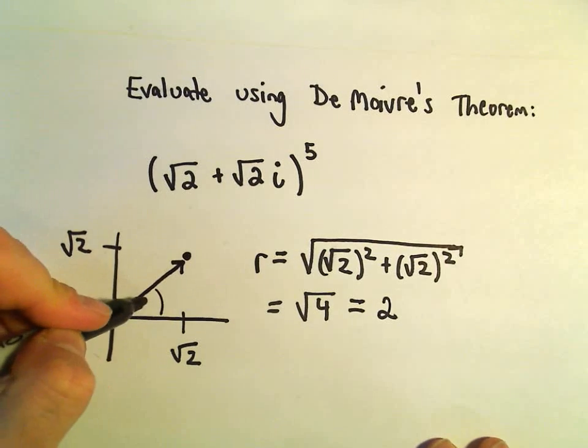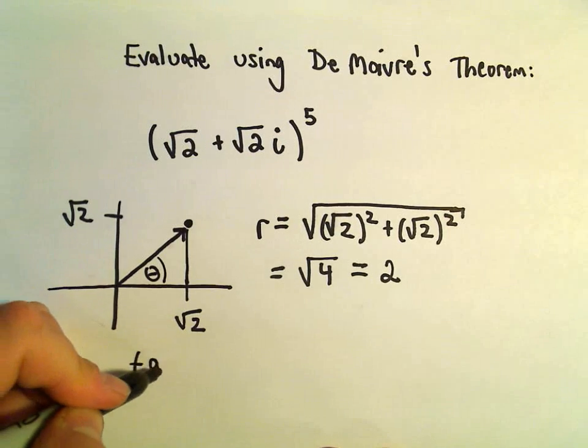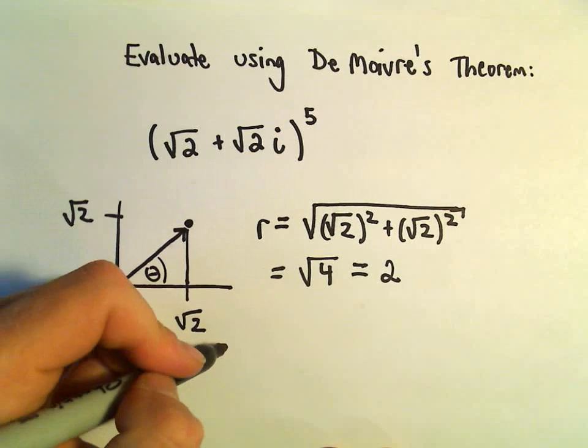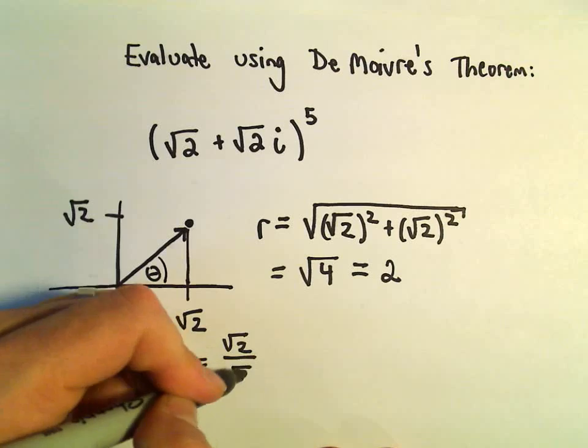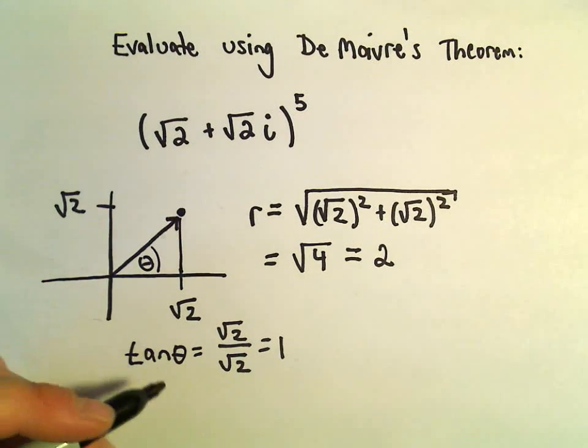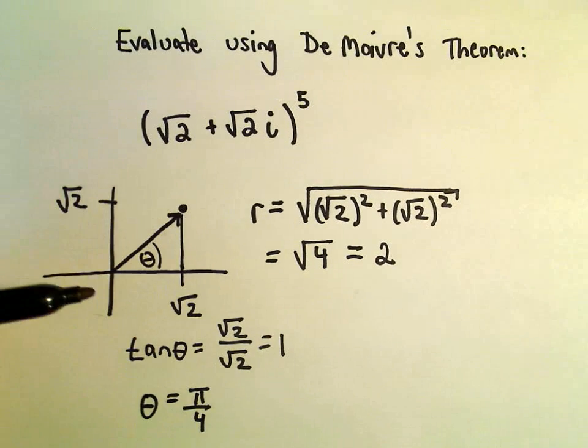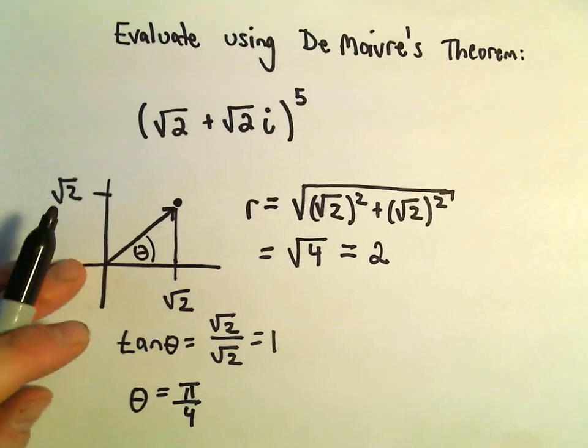We also have to figure out our angle here, theta. But again, if you think about making a little right triangle, we would have tangent of theta equals √2 over √2, which is just going to be 1. And we know that tangent of 45 degrees or π/4 radians will give us the value of 1.